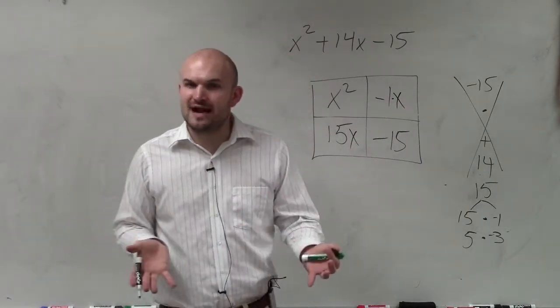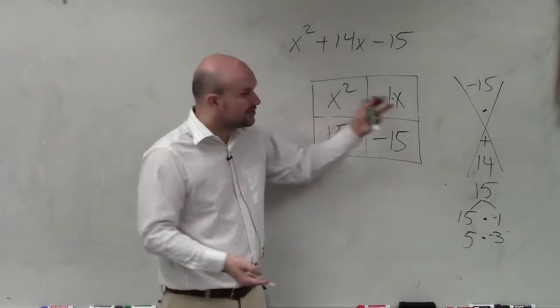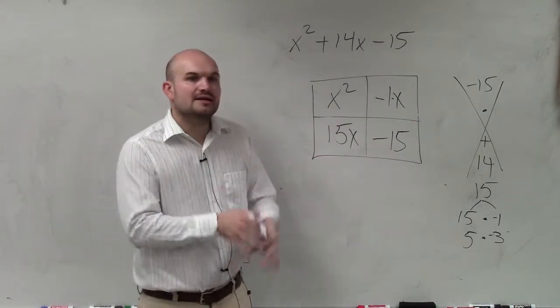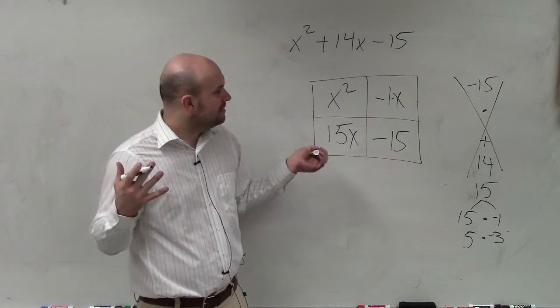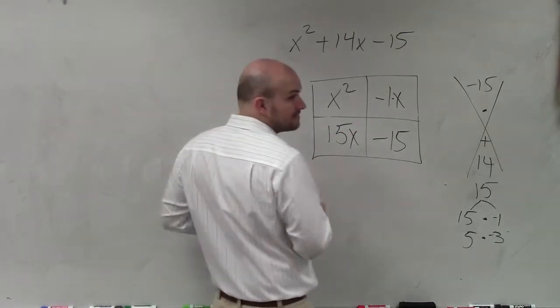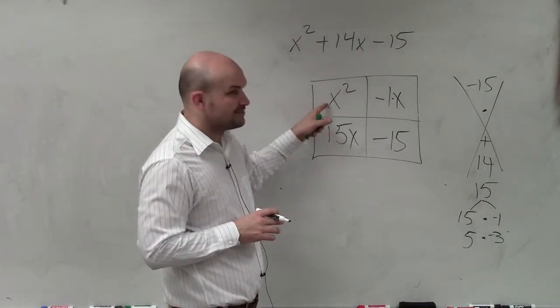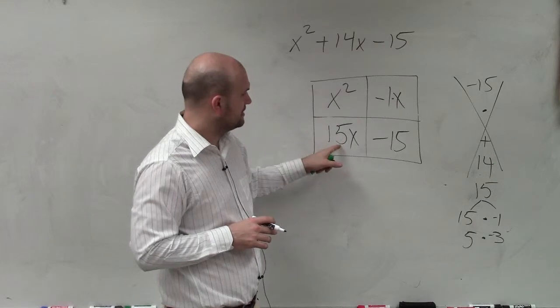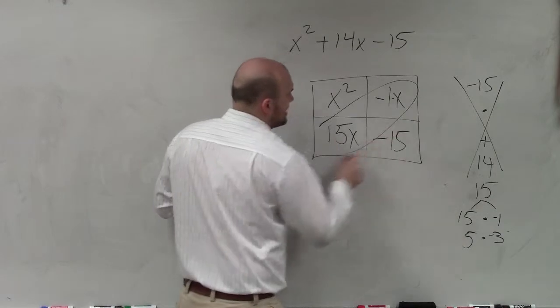Now, basically, we're just working on factoring. You're finding, you're given an area, right? You're given the area of each of these boxes. Now, we're just going to find the sides. Remember when we did the box method, right? We combined these.